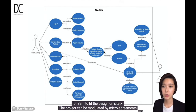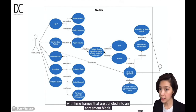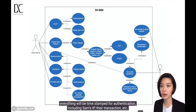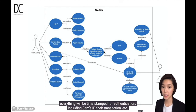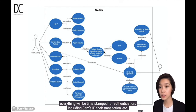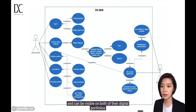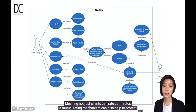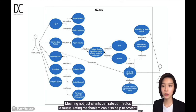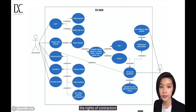The project can be modulated by micro-agreements with timeframes that are bundled into an agreement block. Everything will be timestamped for authentication, including Sam's IP and their transaction, and can be visible on both of their digital portfolios — meaning that not just clients can rate contractors; a mutual rating mechanism can help to protect the rights of contractors.